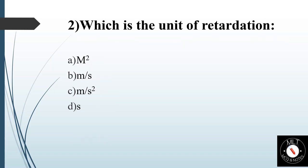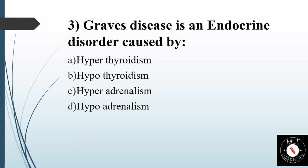Second question. Which is the unit of retardation? Option A: Meter square. Option B: Meter per second. Option C: Meter per second square. Option D: Second. Answer is Option B: Meter per second.